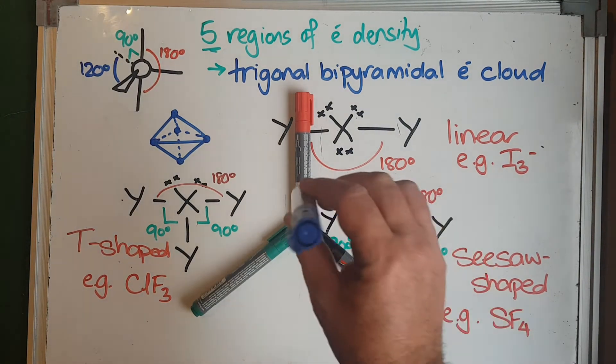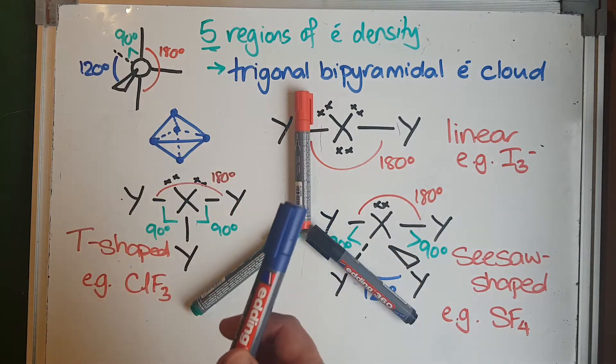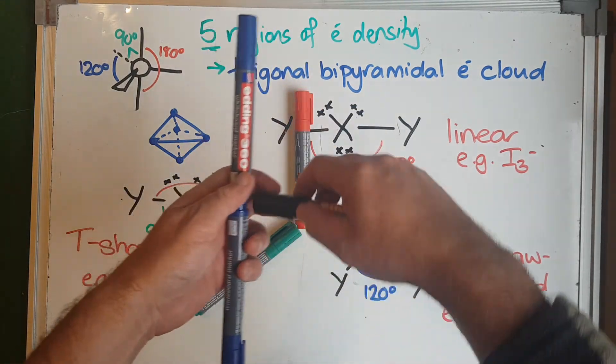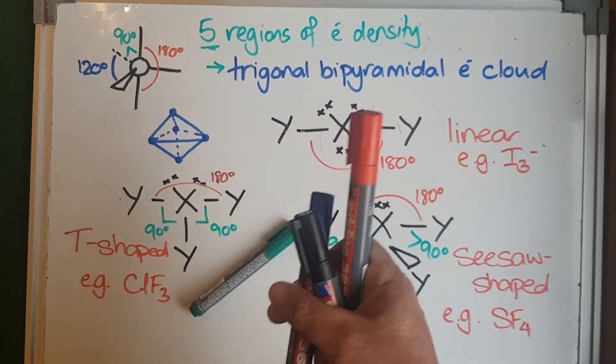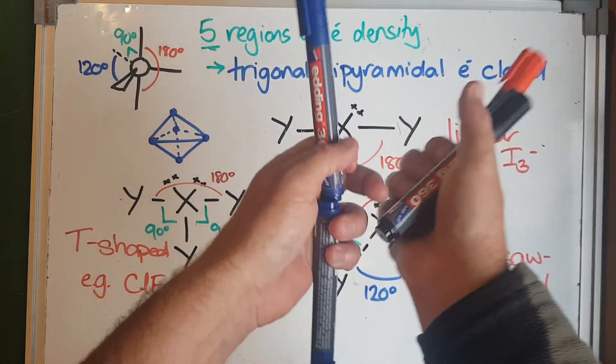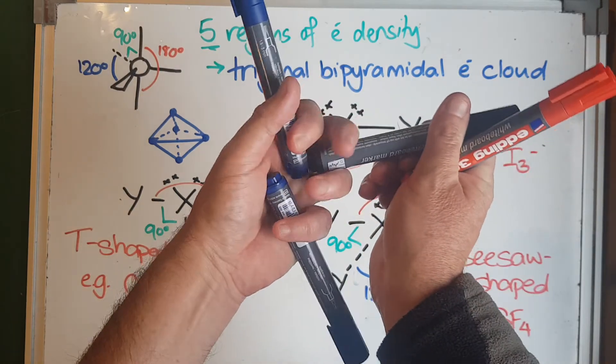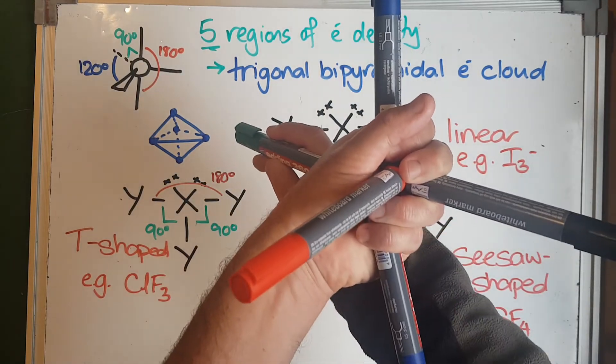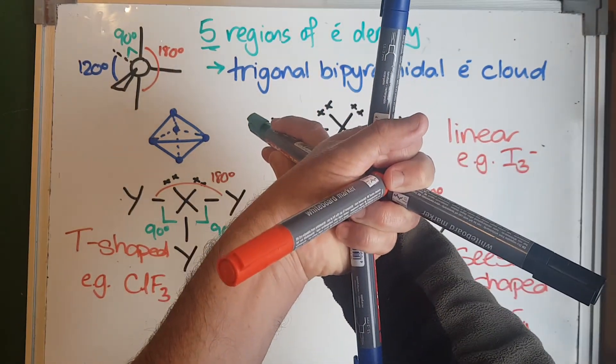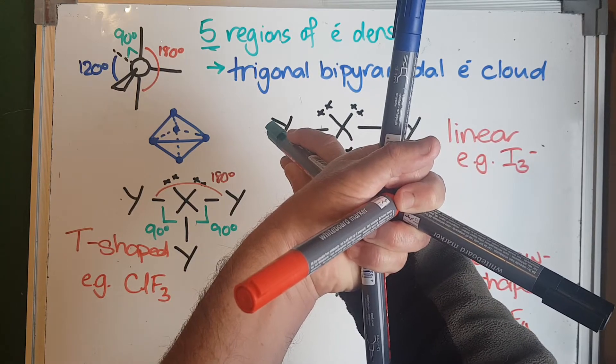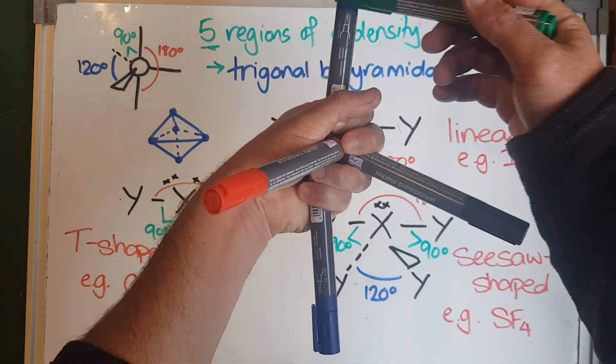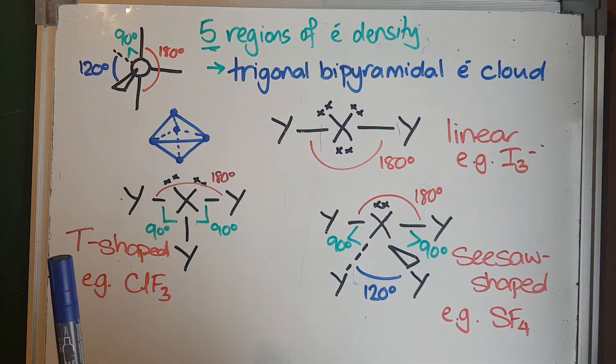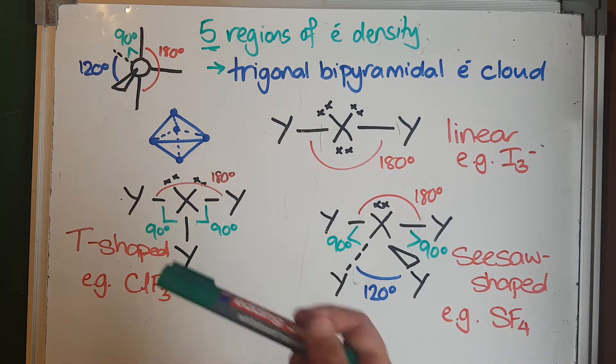Then we've got one on top and one underneath, so what we end up with is something that looks like—it's going to be hard to do with my hands, so bear with me—like this, with one going away into the board. How are we going to draw this on a two-dimensional piece of paper? The way we draw it is the one up and down and the one off to the side get drawn on the same plane like the letter T, and you'll see that's important for one of the shapes.